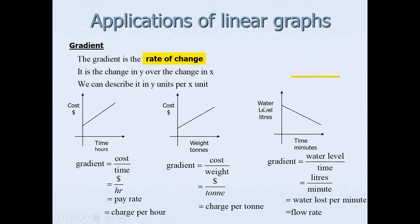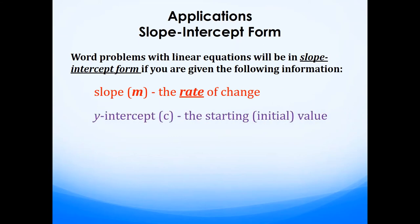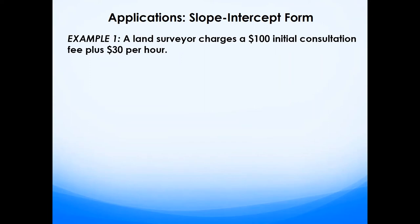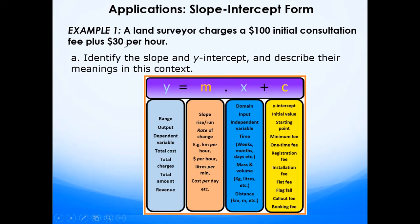In a word problem given in slope-intercept form, you'll be provided with two pieces of information: the slope, which is the rate of change, and the y-intercept, the original or starting value. Example one: Lin survey charges a $100 initial consultation fee plus $30 per hour. You need to identify the slope and y-intercept and describe their meanings in context — looking for keywords like 'dollars per hour' and 'initial charge'.